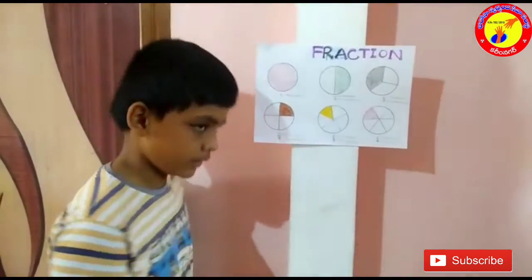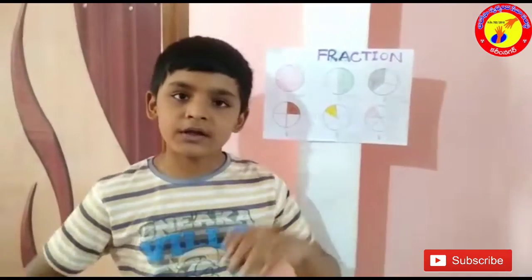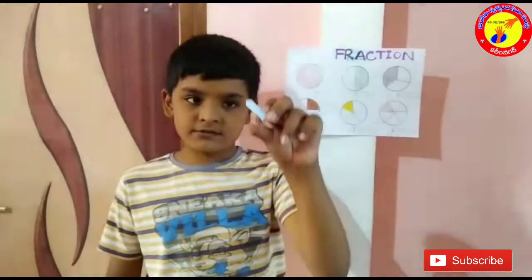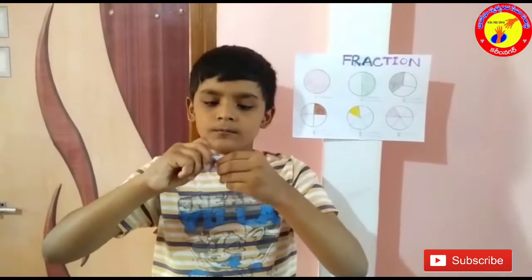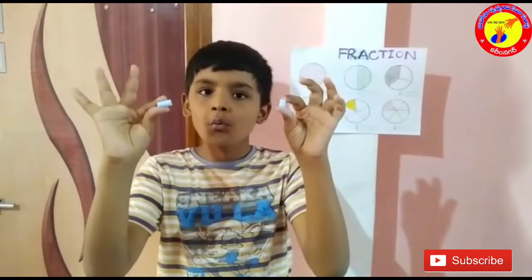1 is the numerator and 6 is the denominator. Not only circles, you can take any objects like a chalk piece. It is a whole and it is now 1 by 2.